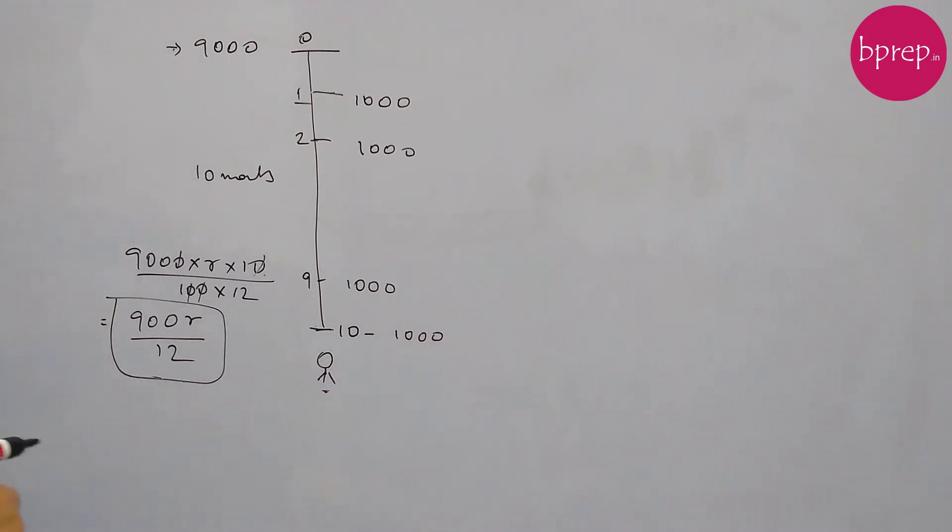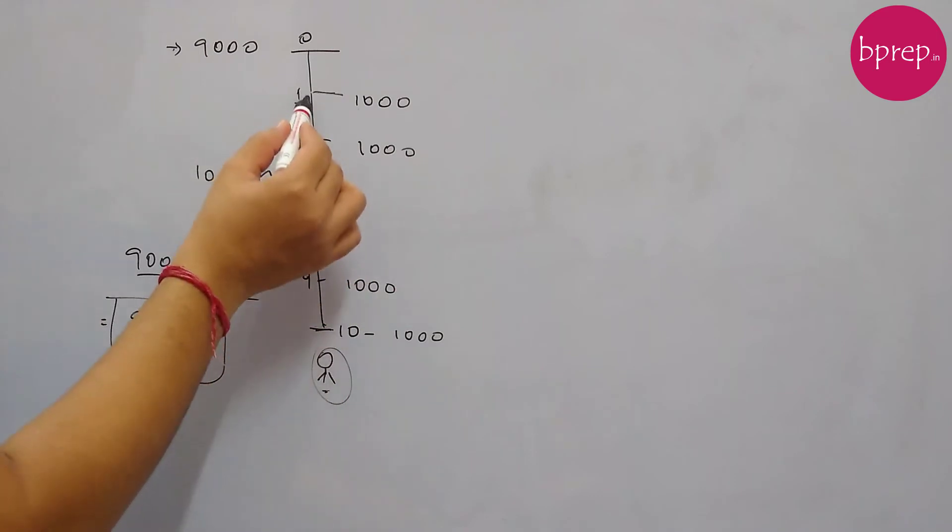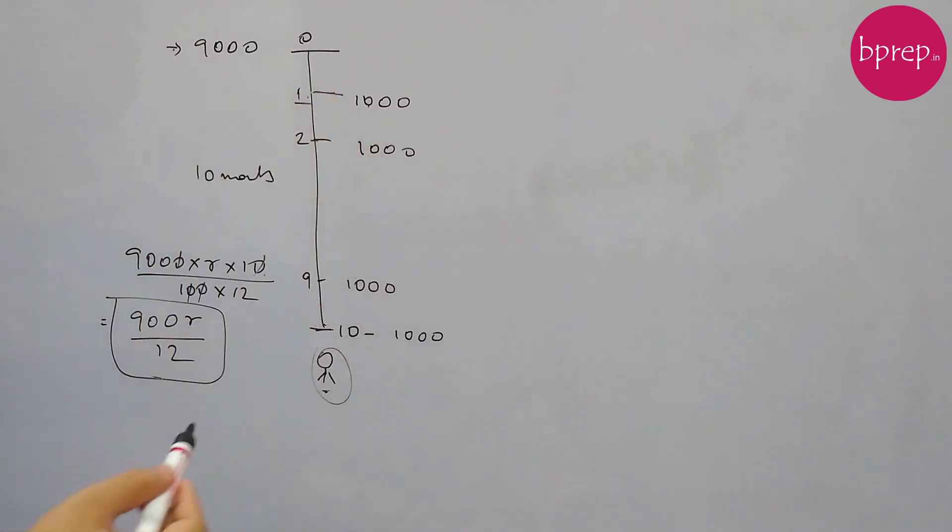So in the 9th month again amount of 1000 is paid and in the 10th month again the EMI of 1000 is paid. Now we are here, we are looking at the situation after 10 months. So forget that there is a loan.